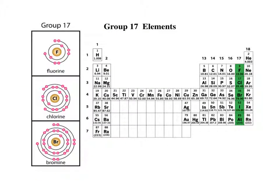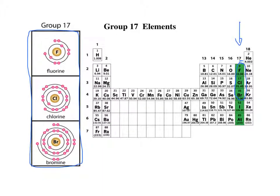Jumping to group 17: the elements in this group have seven valence electrons. Looking at fluorine, chlorine, and bromine — sure enough, all three have seven valence electrons. They are very close to becoming like the noble gases, needing only one more valence electron to fill their shell. That's why they're in the same group and behave in very similar ways — it's all because of the number of valence electrons.